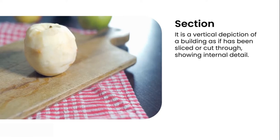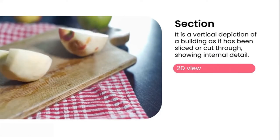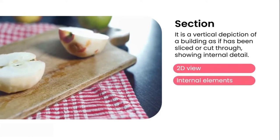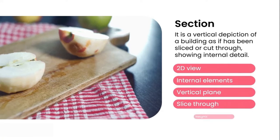Let's look at some key descriptions of our sections. Our section is generally a 2D view, but can be 3D for presentational purposes. It shows us the side of an object and with that shows us internal elevations and internal elements. It's a vertical plane — a slice through an object. As you can see, we've got a slice through an apple. And most importantly, it gives us a sense of height. A slice of an object shows us the detail within the object.